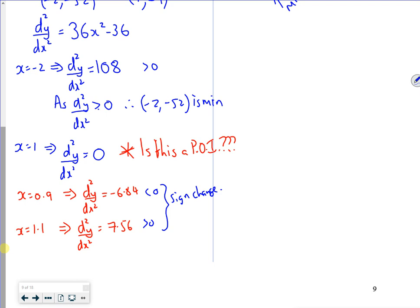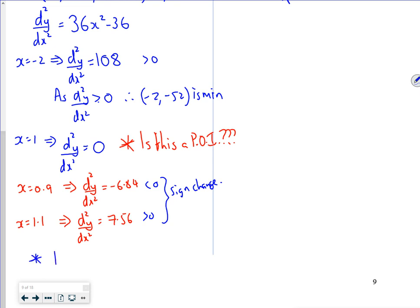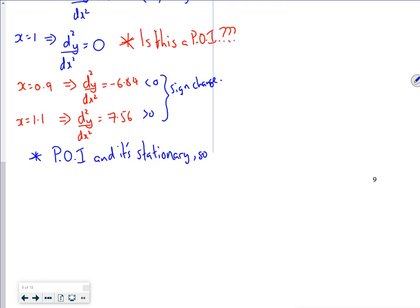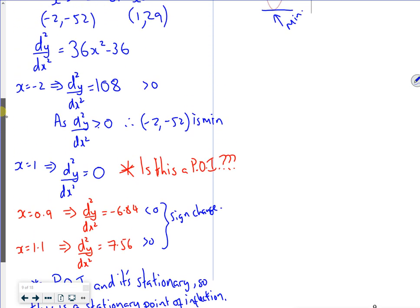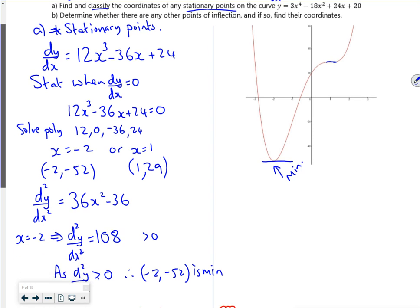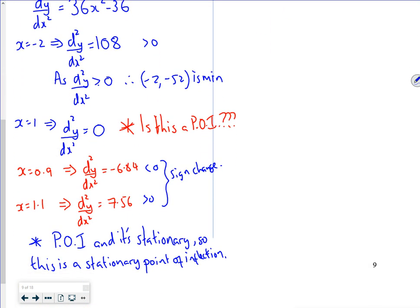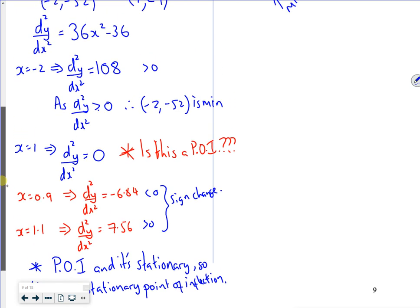So it must be a point of inflection. But it's a bit special - it's a point of inflection and it's stationary. So this is a stationary point of inflection. That's part A done - I've found and classified the stationary points. I've got a stationary minimum and a stationary point of inflection.